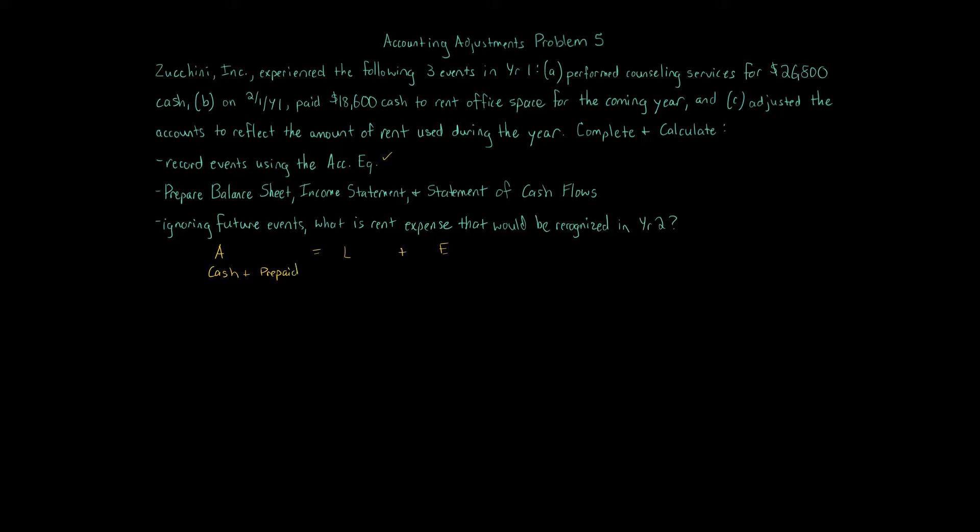For liabilities, we're actually not going to have any liabilities. Then for our equity, we're dealing with a corporation here, Zucchini Inc. We're just going to look at the retained earnings. If we have any effect to retained earnings, we'll also note the specific accounts that are affected in retained earnings, whether it's revenue, expenses, withdrawals, dividends, whatever it is.